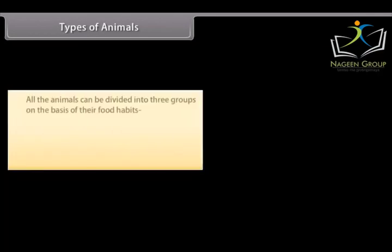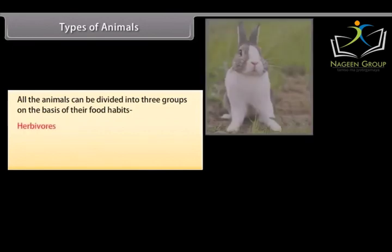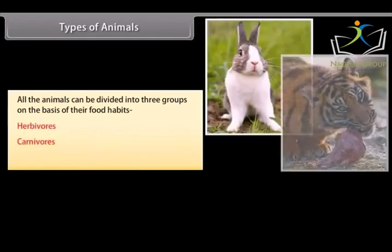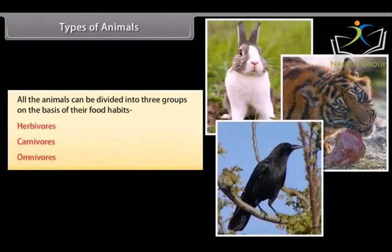Types of Animals: All animals can be divided into three groups on the basis of their food habits — Herbivores, Carnivores, and Omnivores.